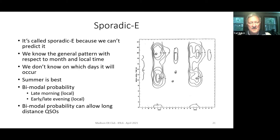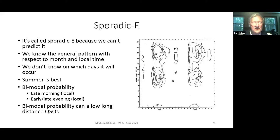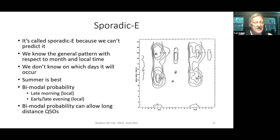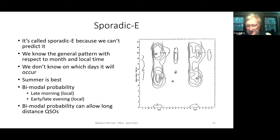That leads us into sporadic E. It's called sporadic E because we can't predict it. We know the general pattern with respect to month and local time - that's what the image on the right shows. Unfortunately we don't really know which specific days will be good days and which will be bad days. All we can say is summer is best, there's a small probability increase in December too, so it's a bimodal probability, and late morning and late evening are best. The bimodal probability can allow very long distance QSOs.